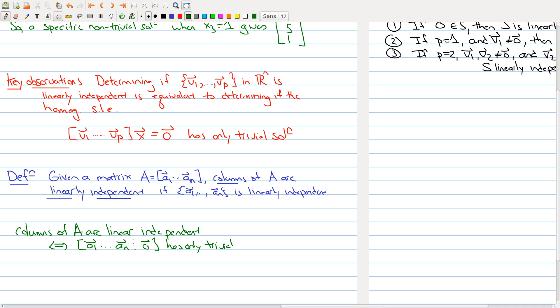It's the same thing as saying that the augmented matrix [A₁ ... Aₙ | 0] has only the trivial solution. Linearly independent is the new word we're using, but you can rephrase linear independence in terms of matrix equations and in particular a homogeneous system.